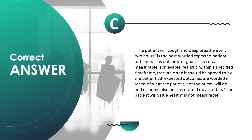The patient will cough and deep breathe every two hours is the best-worded expected outcome because it is specific, measurable, achievable, realistic, within a specified timeframe, trackable, and agreed to by the patient. All expected outcomes are worded in terms of what the patient — not the nurse — will do. The patient will value health is not measurable.